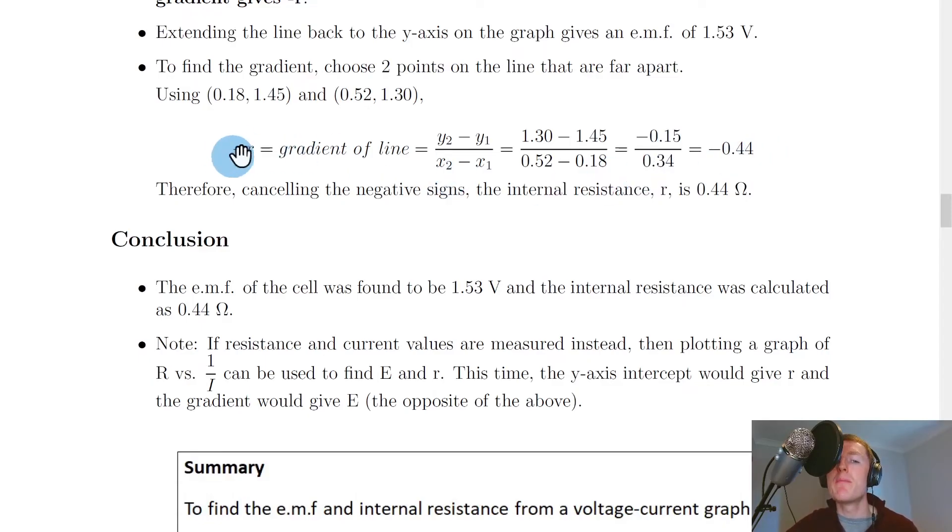However you'll notice that we have minus r on this side and now we have a minus 0.44. So the negatives on both sides can actually cancel out and cancelling these negative signs gives us an internal resistance in this example small r of 0.44 ohms. So you should notice that internal resistance values are always going to be pretty small compared to a normal type of resistance value.